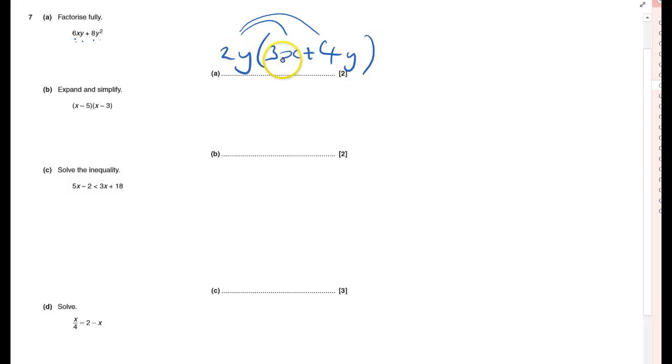Expand and simplify. Well, first off I'll do X times X, which is X squared. Then X times negative 3 is minus 3X. Minus 5 times X is minus 5 more X's. And finally, be careful, minus 5 times minus 3 - minus times a minus is a positive.